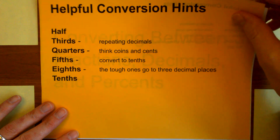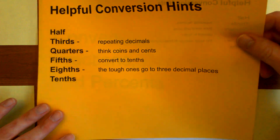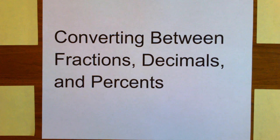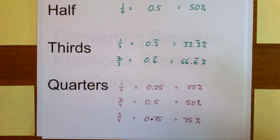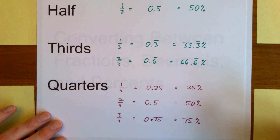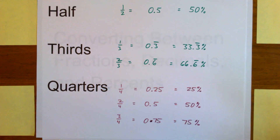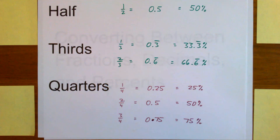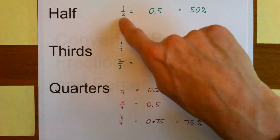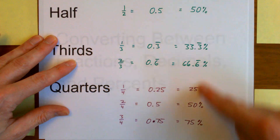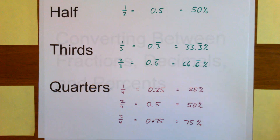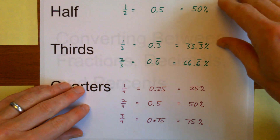But first let's look at just what the answers are, and if you want, you can just memorize these. So here is one-half, thirds, and quarters. You can pause the video and write these down if you want, or take a screenshot and print. But here are the fractions, the decimals, and the percents for half, third, and quarter.